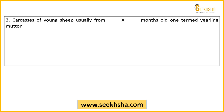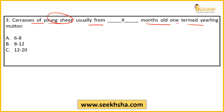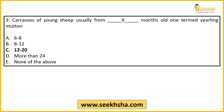Next, third question: Carcasses of young sheep, usually from how many months old, are termed as yearling mutton? Which age group of sheep meat is called yearling mutton? Options are: A) 6-8 months, B) 8-12 months, C) 12-20 months, D) more than 24 months. So yearling mutton is from sheep that are 12 to 20 months old.